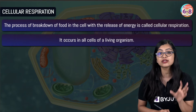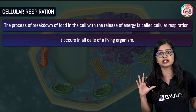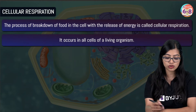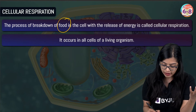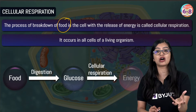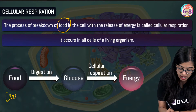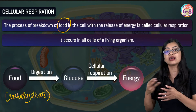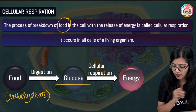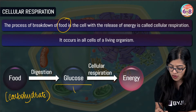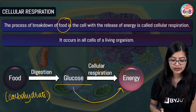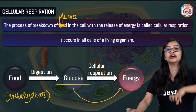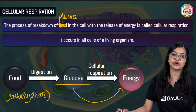Cellular respiration occurs in all living organisms — not just human beings, animals, or plants — all living organisms require energy. Food is first digested and broken down into simpler forms. Specifically, carbohydrates undergo complete digestion and get converted into their simplest form, which is glucose. So when breakdown of glucose takes place, it gives energy. Another way of stating this: the process of breakdown of glucose in order to release energy is what we call cellular respiration.